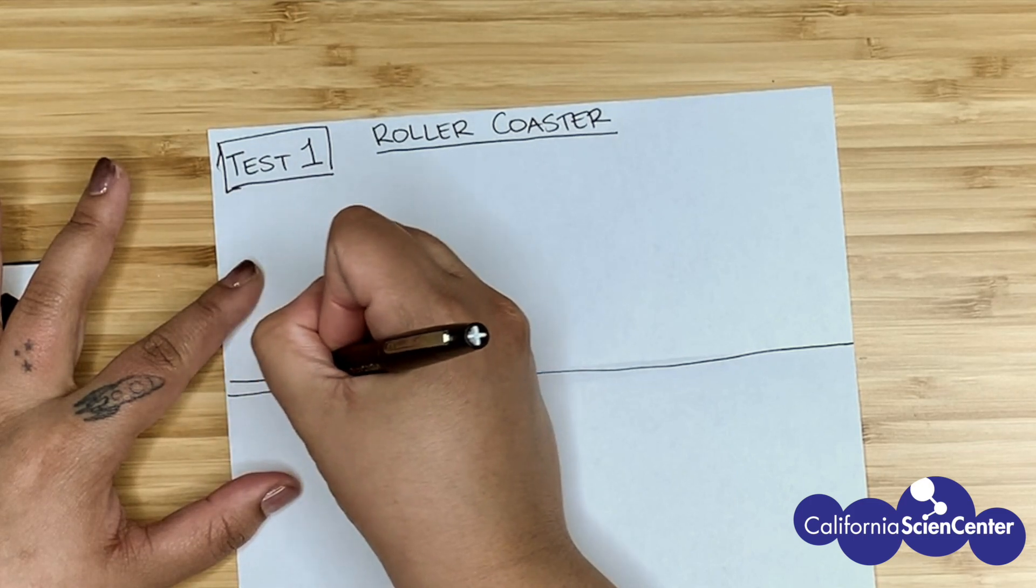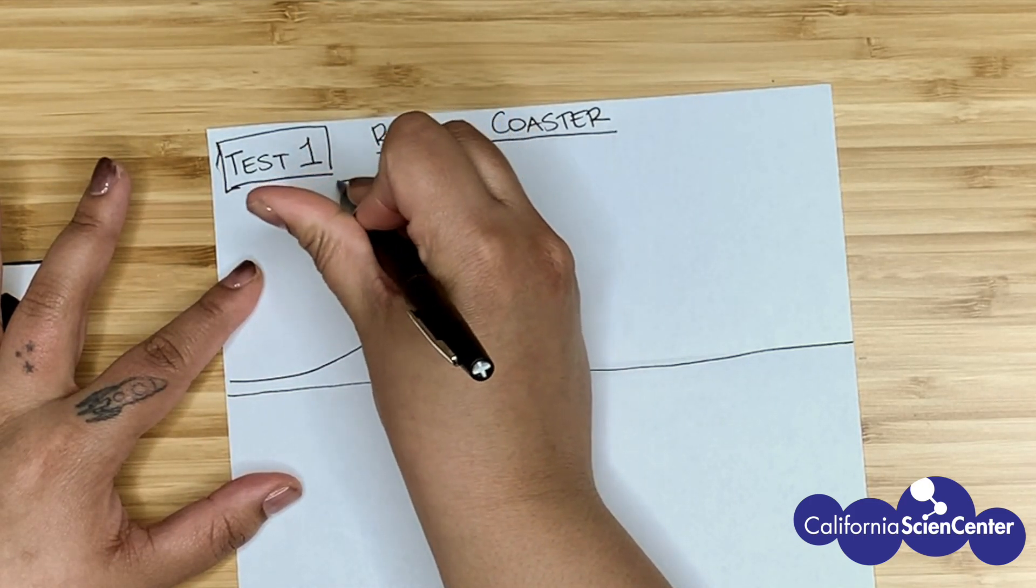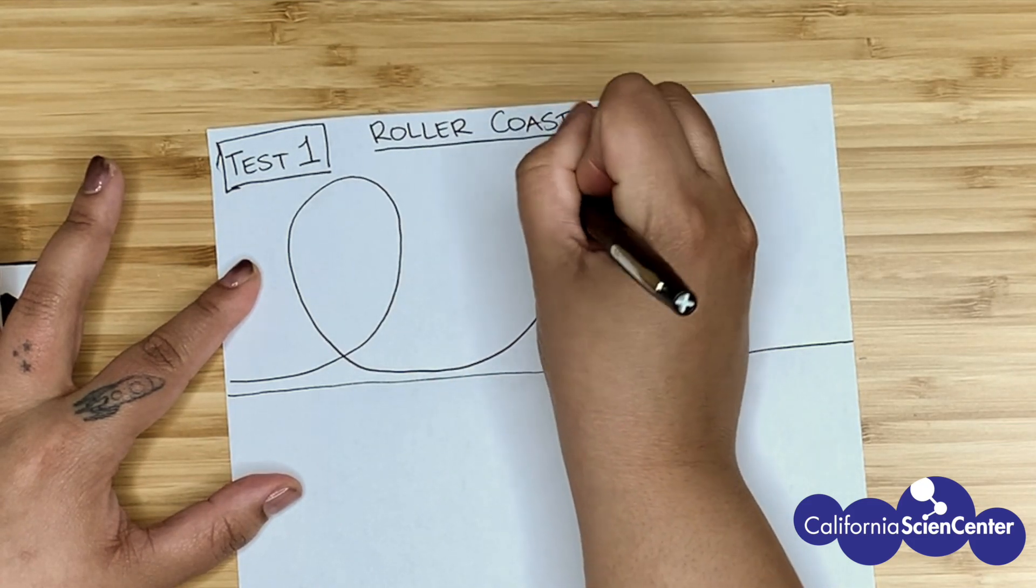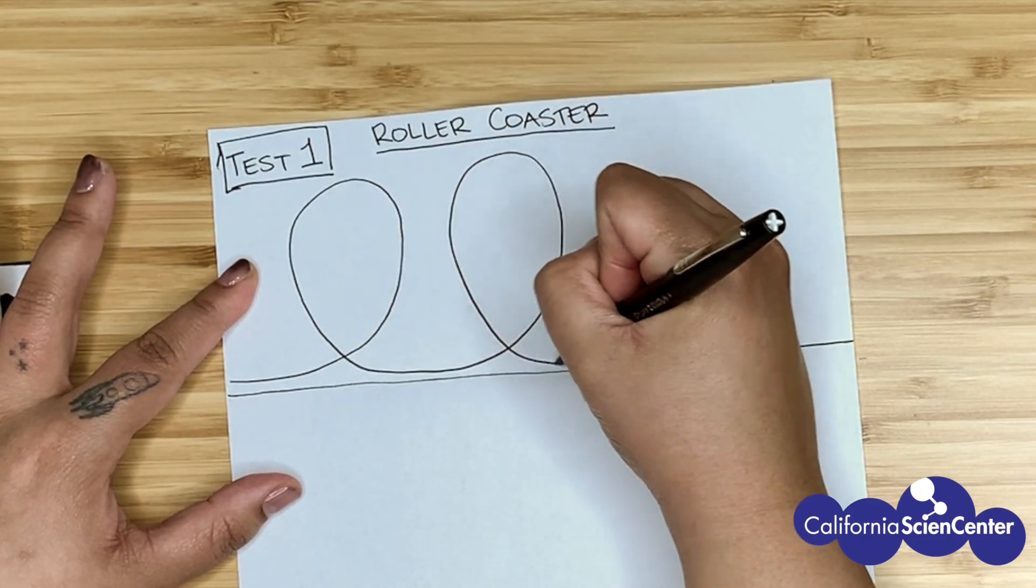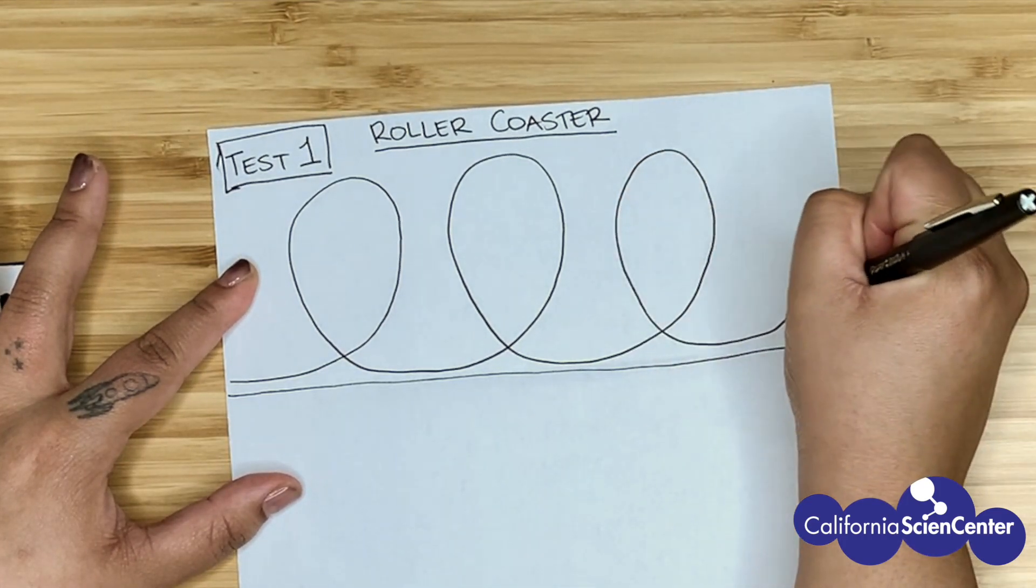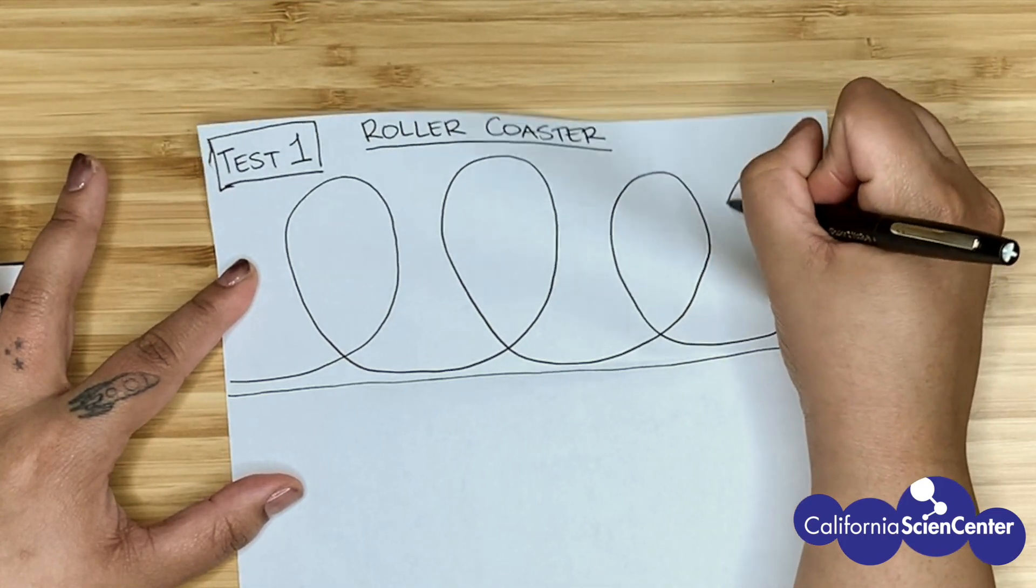My favorite part of a roller coaster are the loops and I really want my roller coaster to be thrilling. So my first prototype will be full of loops. This could be real fun or make someone really dizzy.